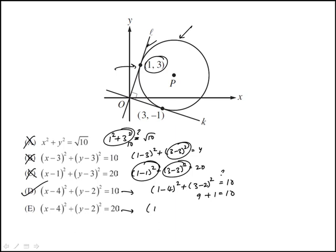And then finally this one would be (3 - 2) squared, is that equal to 20? 3 squared would be 9 plus 1, again it's not equal to 20. So just by using one point that's on the circle, we can get to the answer, and that's why this is easy.